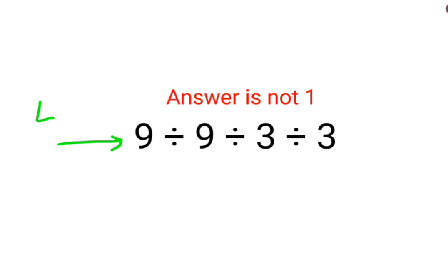You have to strictly follow the rules of left to right. Whatever operation happens first on your left-hand side has to be done first. So we have 9 divided by 9 which is 1, divided by 3, divided by 3.